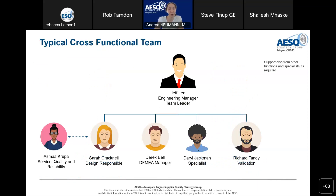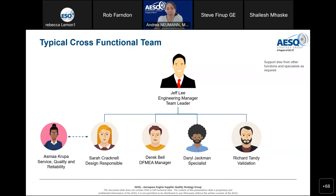For the cross-functional team, there is typically a team leader — often the engineering manager responsible for the part or system. There is also a DFMEA manager, someone responsible for the method who guides others through the process. Then there are various other specialists: someone responsible for the design, specialists from different departments such as validation, and contacts with service quality and reliability experts.